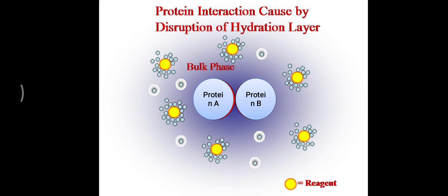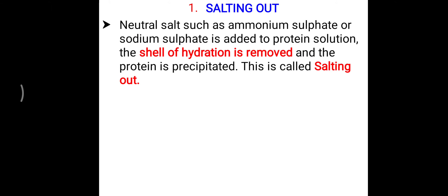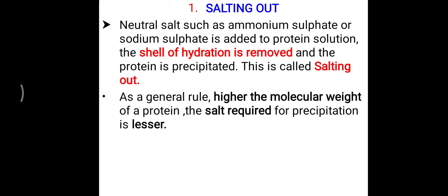The shell of hydration can be removed with the help of different methods, all of which are called precipitation reactions of the protein. The first method is salting out: when neutral salts such as ammonium sulfate or sodium sulfate are added to a protein solution, the shell of hydration surrounding the protein molecule is removed and the protein is precipitated. As a general rule, the higher the molecular weight of a protein, the less salt is required.